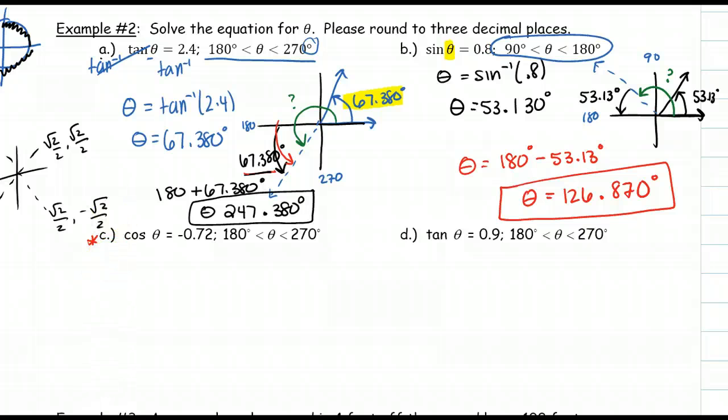We first need our angle. We need theta. I have cosine, so I'm going to do a cosine inverse of negative 0.72. Then you'll take that into your calculator. You get that your angle that your calculator gives you is 136.054 degrees. But it's supposed to be between 180 and 270, and this angle is not. 136 is in the second quadrant. That is not between 180 and 270.